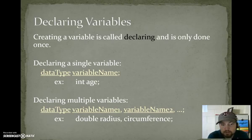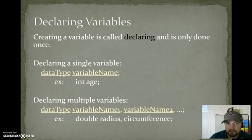If we wanted to declare multiple variables, they would all have to be of the same type, but it would be data type variable name comma variable name comma variable name so forth. An example would be double space radius comma circumference semicolon. This creates two different containers, one called radius, one called circumference, and they are both of type double.